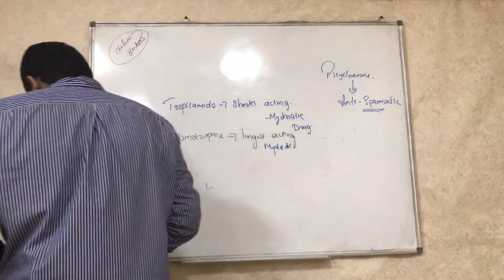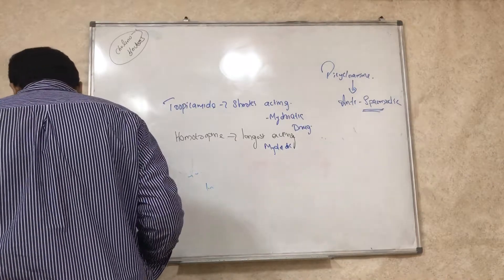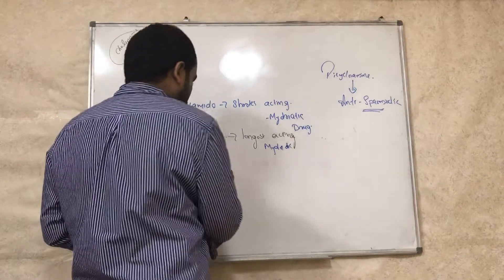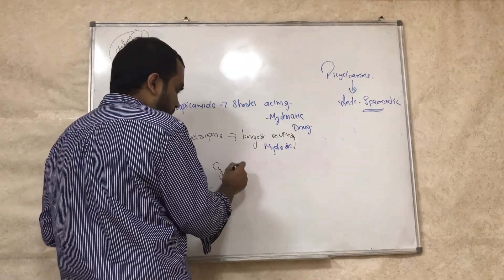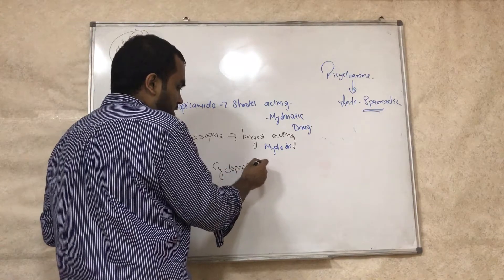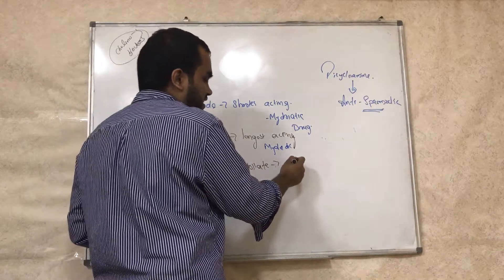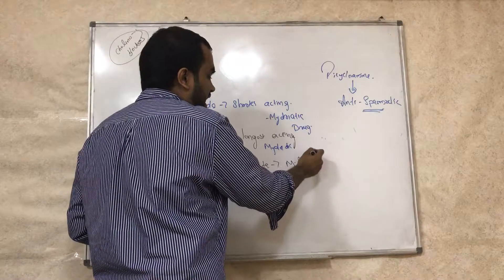So some other drugs include cyclopentolate. Cyclopentolate - all are cholinoblockers. This is also a mydriatic agent, very good mydriatic agent, and they will give you cycloplegia also, cycloplegia.